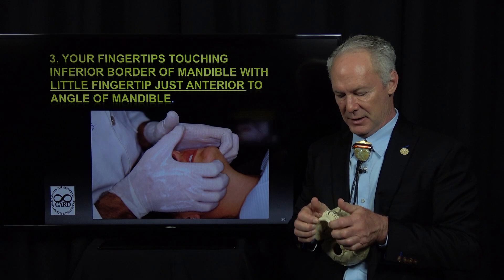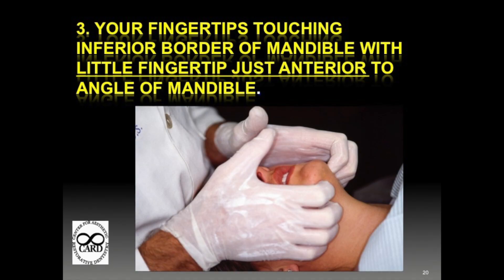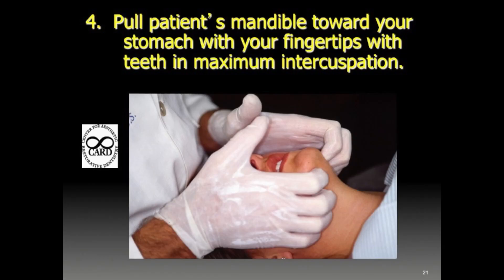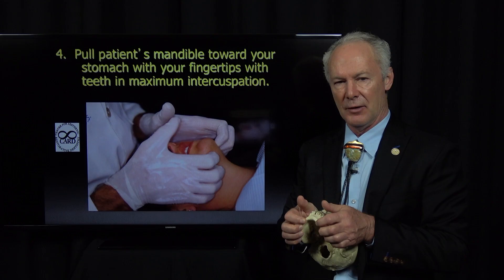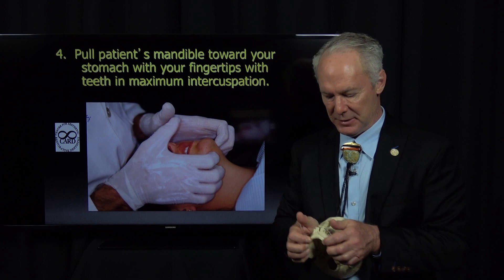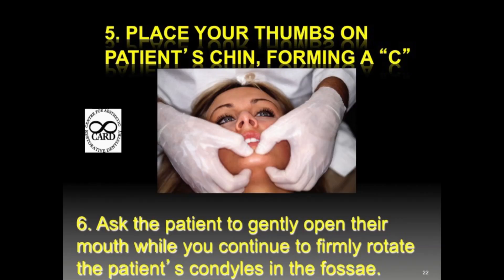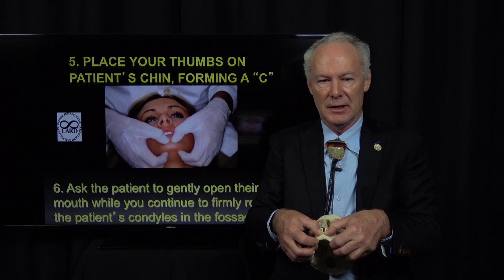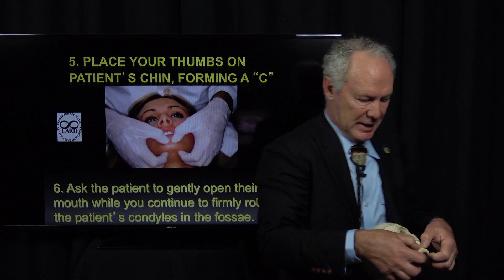Put your fingertips on the inferior border of the mandible and pull the teeth together into centric occlusion. Spread the fingers across the inferior border of the mandible — don't put the thumbs on yet. Pull the patient's mandible toward your stomach with the fingertips, with the teeth in maximum intercuspation. Then raise your wrist, put your thumbs on the patient's chin forming a C, and ask the patient to gently open their mouth while you firmly rotate the patient's condyle into the fossa.